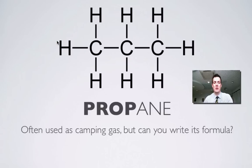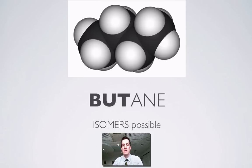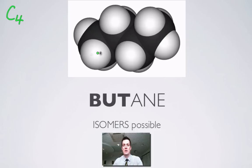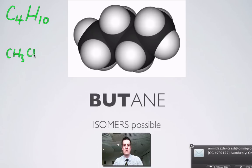Let's move on to the alkane with four carbons. This is shown as a space-fill model, which shows the shape of the electron clouds in the molecule but doesn't show the bonds very clearly. We're talking about a molecule with four carbons, so C₄. There are ten hydrogens in total — 2×4+2 = 10 — so C₄H₁₀. We could also write it as CH₃, CH₂, CH₂, CH₃.